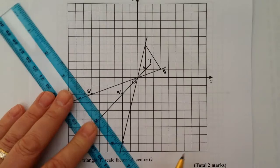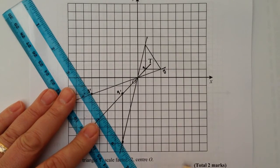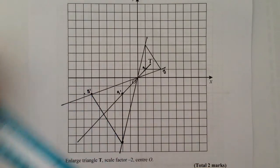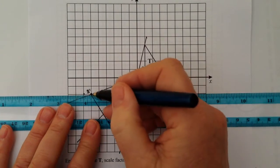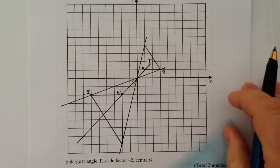And if I join up the dots here, that will give me then a scale factor enlargement of minus 2 through the center, 0, 0.